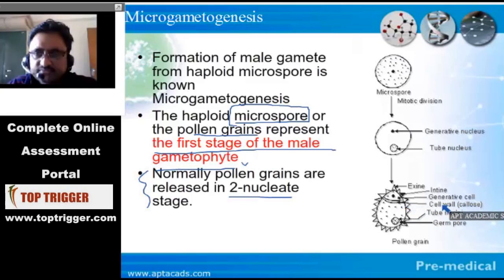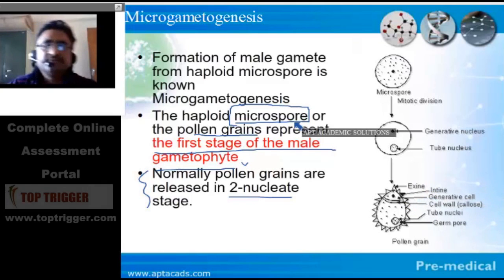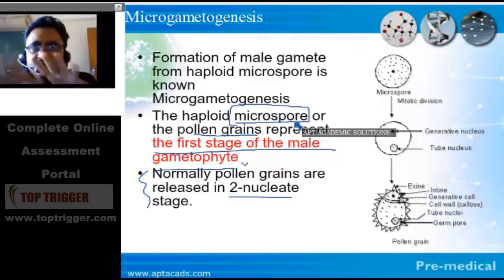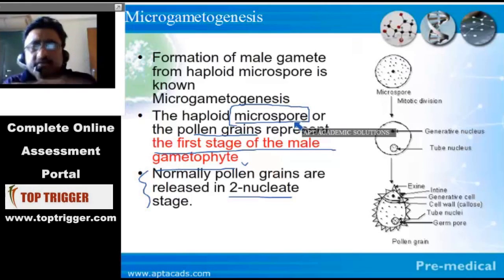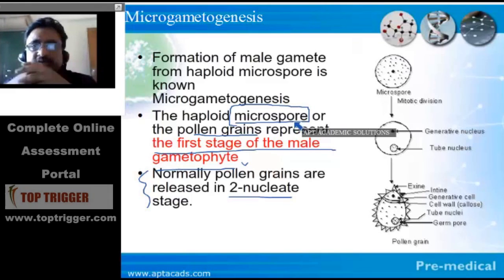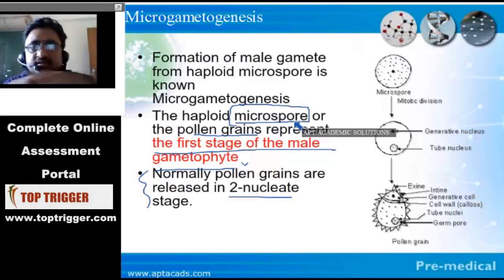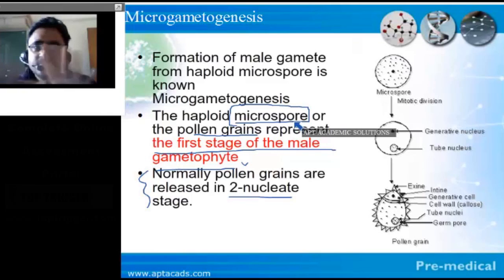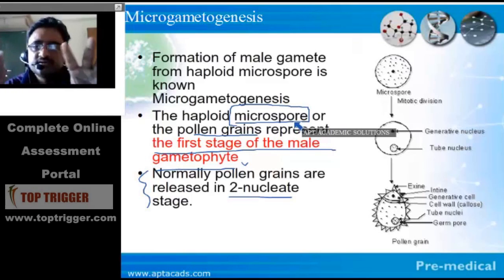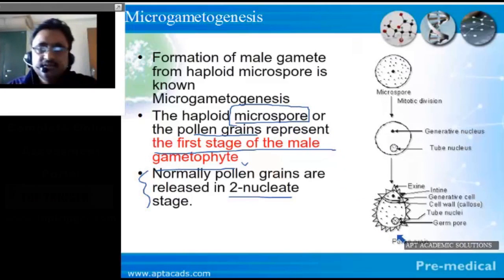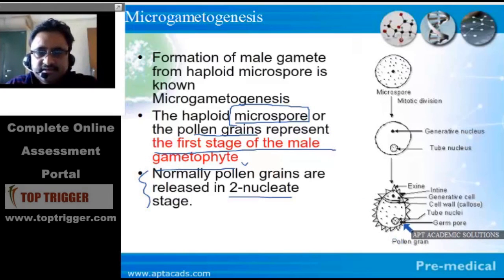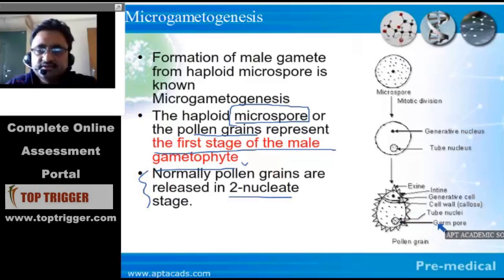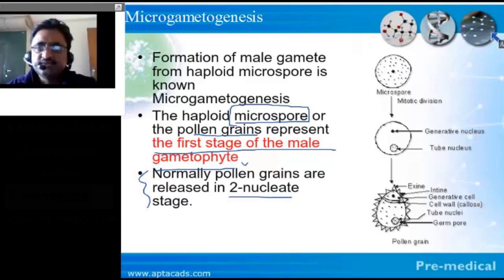The cell wall within a plant cell is always made up of callose. There is also a germ pore, and from this germ pore, when the pollen grain germinates, a structure grows out. We call the study of pollen grains palynology.